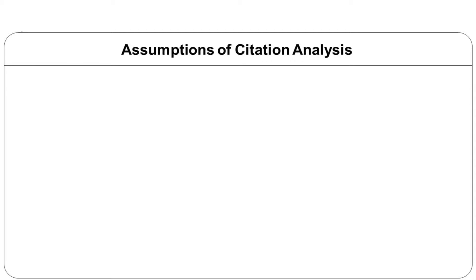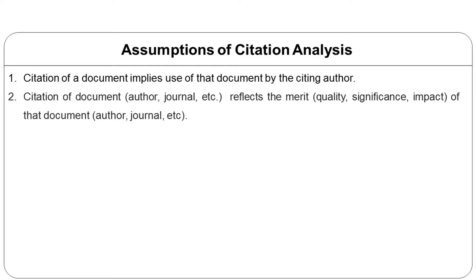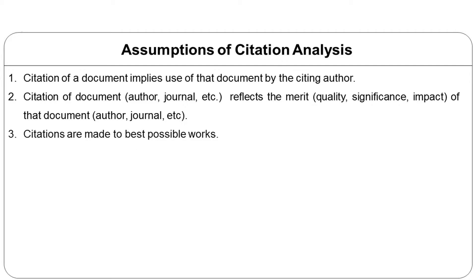Citation analysis is based on a few assumptions — five of them are listed here. First, citation of a document implies use of that document by the citing author. Second, citation of documents reflects the merit of that document. Third, citations are made to the best possible works. Fourth, a cited document is semantically related in content to the citing document. Fifth, all citations are equal. All these assumptions appear true, but they have inherent flaws in them.